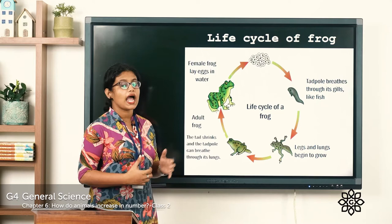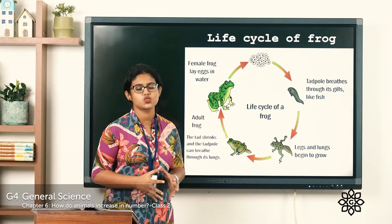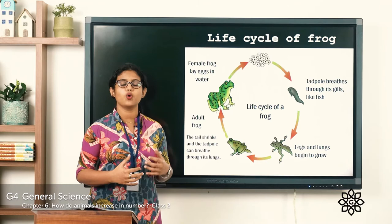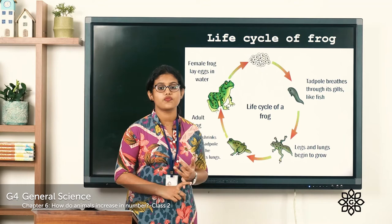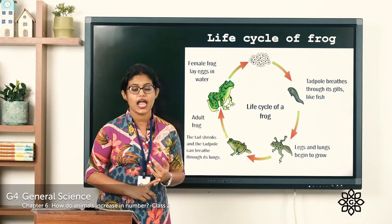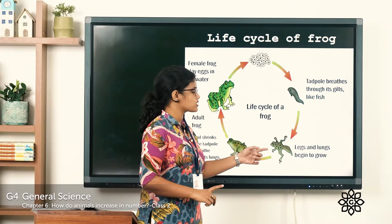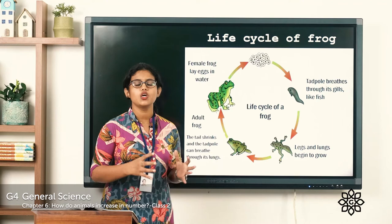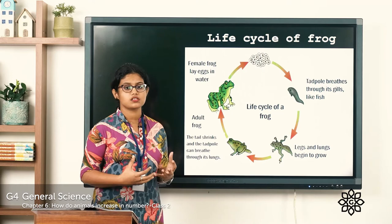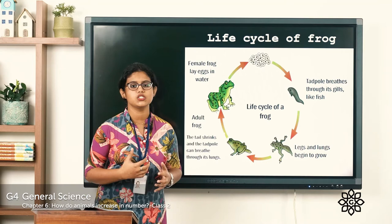The next stage is the adult frog. From the froglet stage it transforms into an adult frog, and at that stage they will be able to hop in and out of water and onto land. So this is the life cycle of a frog: it begins as an egg, the eggs hatch into tadpoles that look like fish, then comes the froglet stage where lungs and legs grow and the tail disappears, and finally it becomes an adult frog.